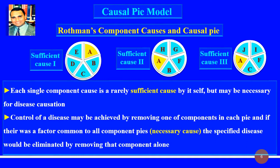Each single component cause is rarely a sufficient cause by itself, but may be necessary for disease causation. Control of a disease may be achieved by removing one of the components in the pie. If there is a factor common to all component pies — such as letter A here — it is called a necessary cause. The specified disease would be eliminated by removing that component alone.